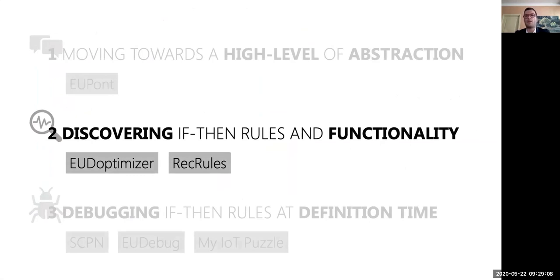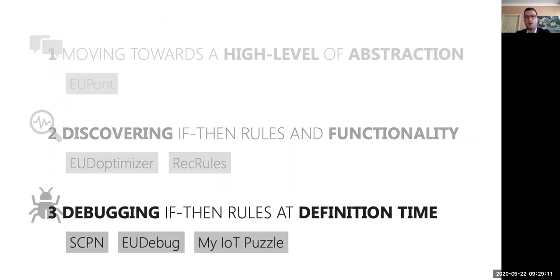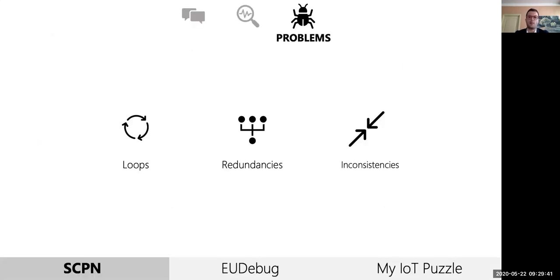The last part of this thesis focuses on the need to avoid conflicts among rules and assess their correctness. Previous work addressed this challenge by leveraging software engineering techniques to formally verify rule behavior. Instead of checking rules offline, we tried to support users during the rule definition process by providing them with debugging mechanisms. We started by reviewing previous work on rule analysis in different contexts to identify the problems to be checked and avoided, and we settled on three main control flow bugs: loops, redundancies, and inconsistencies.